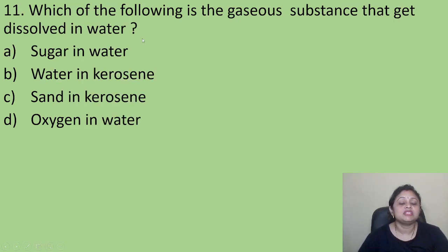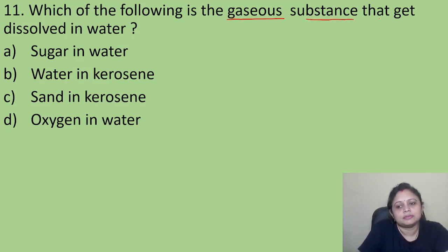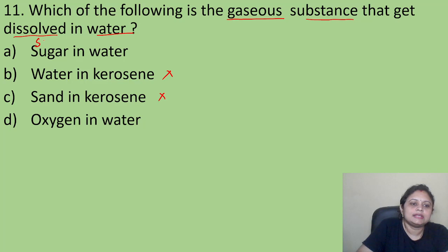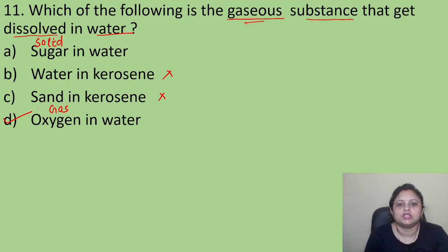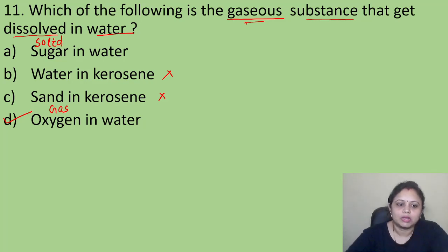Coming to the next question: which of the following is a gaseous substance that gets dissolved in water? Option A: sugar in water. Option B: water in kerosene. Option C: sand in kerosene. Option D: oxygen in water. Kerosene is not our answer. Sugar is dissolved in water, but sugar is solid. Oxygen is also dissolved in water, and oxygen is present in the gaseous state. So the correct answer is Option D, that is oxygen in water. Aquatic animals take this dissolved oxygen from water.